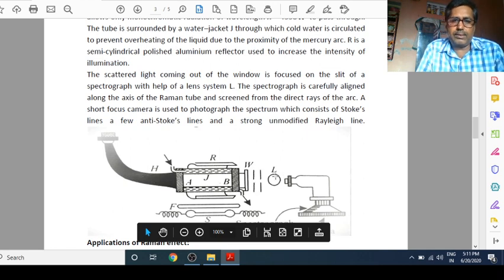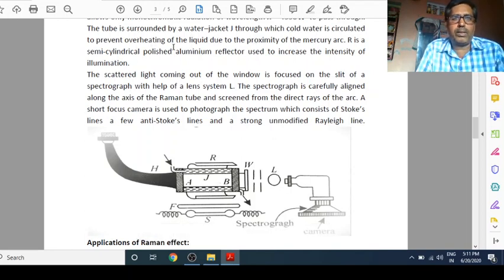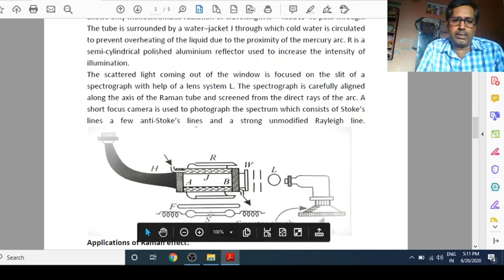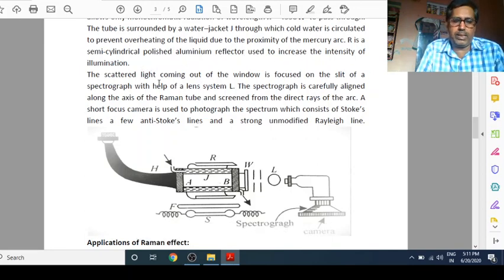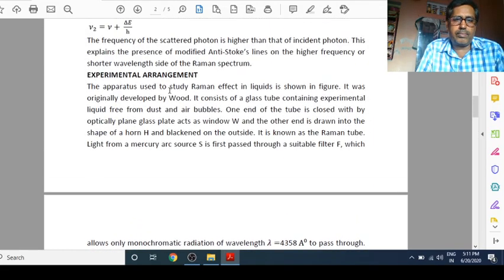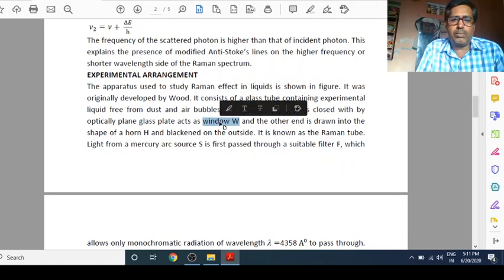As I told you, the tube is surrounded by water jacket J through which cold water is circulated to prevent overheating of the liquid due to proximity of the mercury arc. This is mercury arc. R is a semi-cylindrical polished aluminum reflector used to increase the intensity of the illumination. So its description is here. First, I told you, it consists of a glass tube which contains experimental liquid. One end of the tube is closed with optically plain glass plate acts as window W. Other end is drawn into the shape of horn. And black end on the outside. It is known as Raman tube.